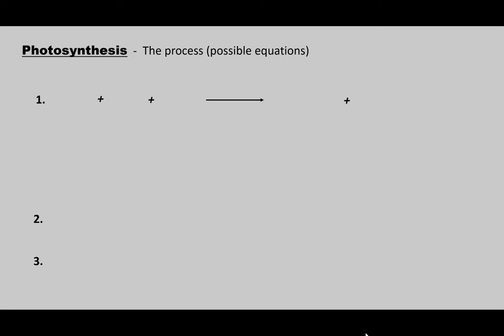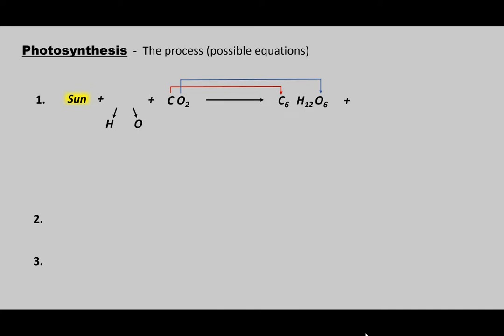Some possible equations for photosynthesis — there are three. Photosynthesis makes glucose, and in order to make glucose with carbon, hydrogen, and oxygen, you need to get those atoms from water and carbon dioxide. Sunlight powers this whole process. The carbon and oxygen from CO2 will become part of sugar. The hydrogen comes from water, and the sun will split water into hydrogen and oxygen — a process known as photolysis, meaning light splits.